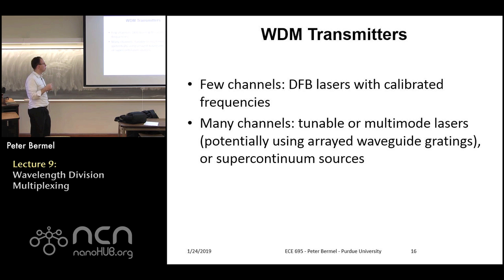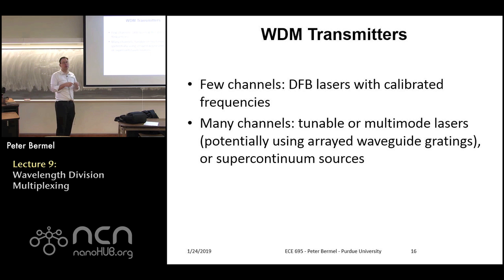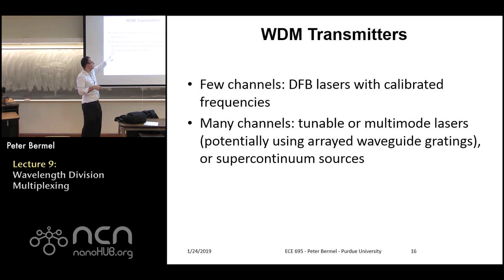These arrayed waveguide grating outputs can potentially be tuned by moving the gratings to adjust the direction of each output. If you really need a lot of wavelengths beyond this, there's another strategy called a supercontinuum source. The concept is that you take individual laser excitation and pulse it ultra-fast, so the output becomes essentially like broadband white-light CW output. Supercontinuum sources are very broadband, very bright, and produce coherent output. The main catch is that these are currently pretty expensive, so they're probably not commercially viable right now, though they could be in the future.